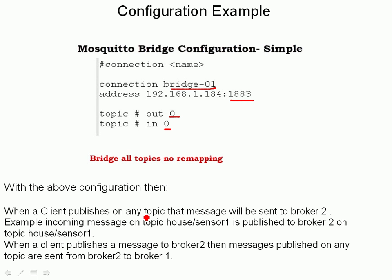With the above configuration, when a client publishes on any topic on broker 1, that message will be sent to broker 2 unchanged. So an incoming message on topic 'house/sensor1' is published to broker 2 on topic 'house/sensor1' — no change at all. And when a client publishes a message to broker 2 on any topic, that message is sent to broker 1. Effectively, broker 1 is subscribing to broker 2 using the wildcard topic.